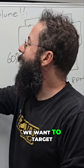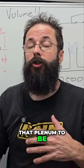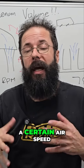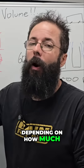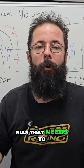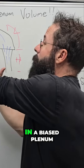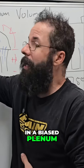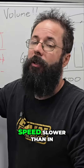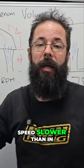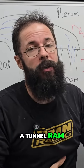We want to target that plenum to be a certain airspeed, depending on how much bias it needs to compensate for. So in a bias plenum with a throttle body at the front, we need the airspeed slower than in, say, a tunnel ramp.